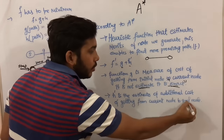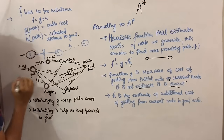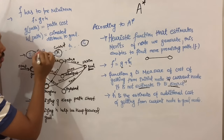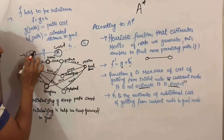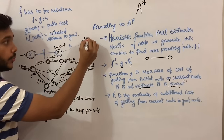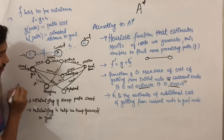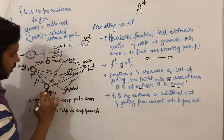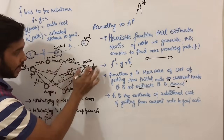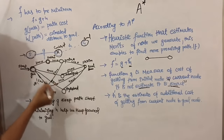The second function h is the estimate of additional cost of getting from the current node to the goal node. Suppose this was our start node and this was our goal node, and we are now at this current node. So g will be the exact cost from the start node to the current node, and h will be the rough estimate from the current node to the goal node. From Goa to Bangalore, g is 1200, but from Goa you can reach Sikkim through two routes.